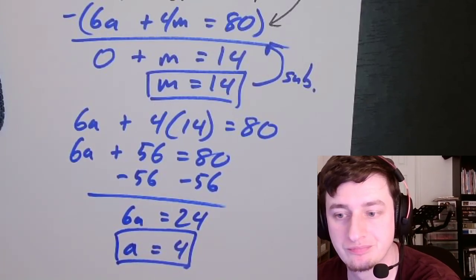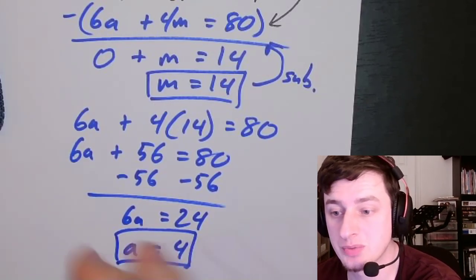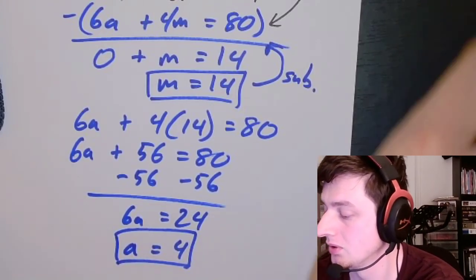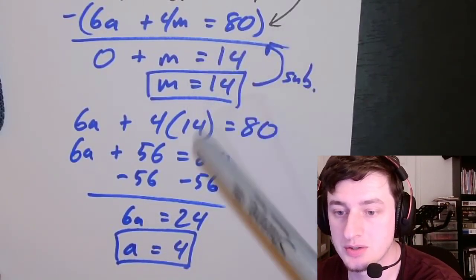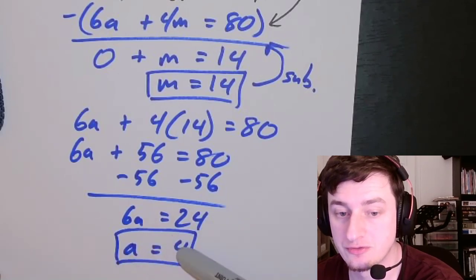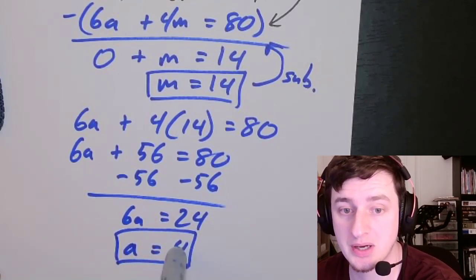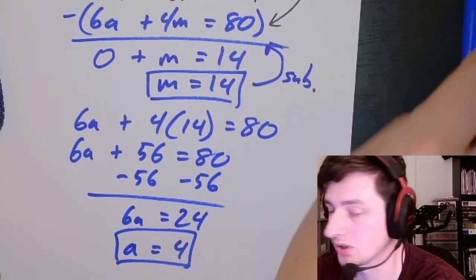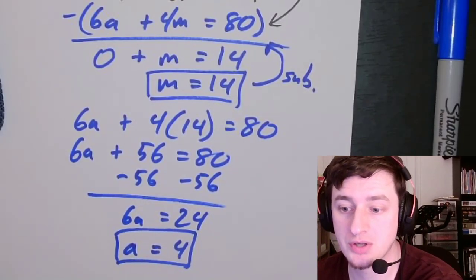We're done. Now we would like this to be written in terms of dollars. M is $14 and A is $4. The cost of the apple pie is $4, and the cost of the lemon meringue pie is $14. We've solved the system.